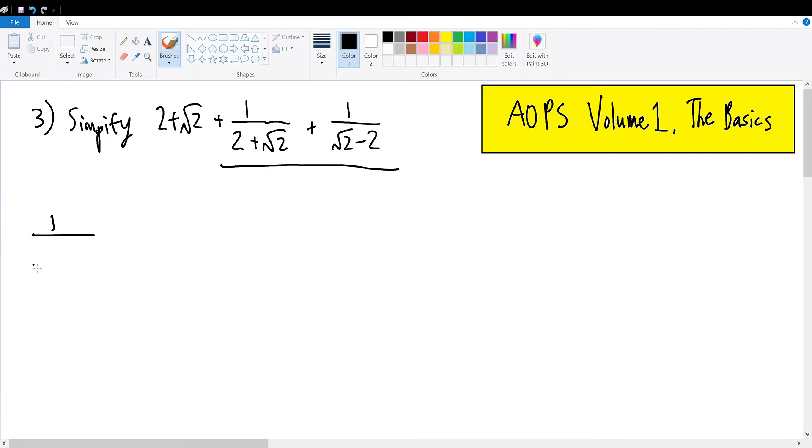We're going to first simplify 1/(√2 + 2) + 1/(√2 - 2) because I see that we can make the denominator a relatively good number without the square root by applying the difference of squares formula.